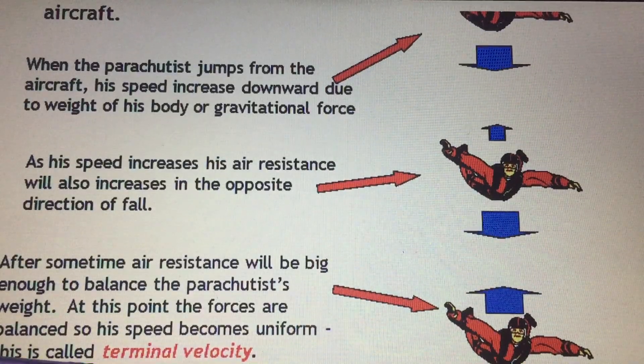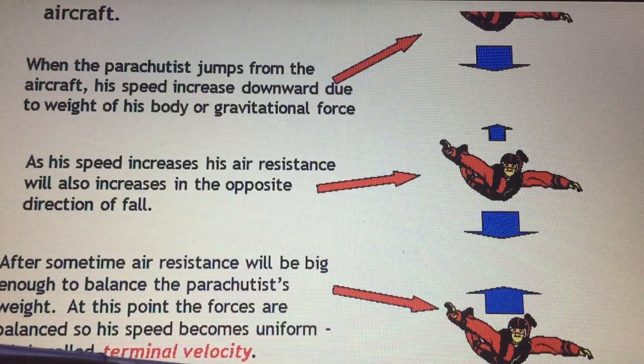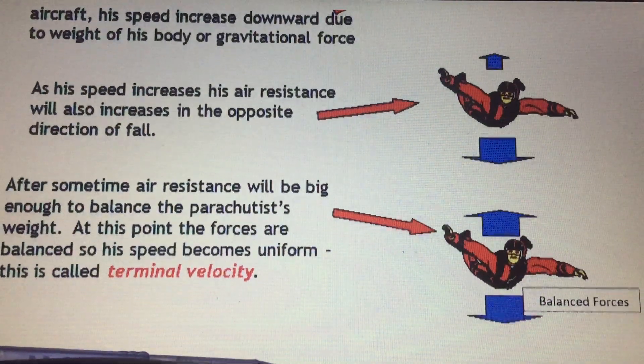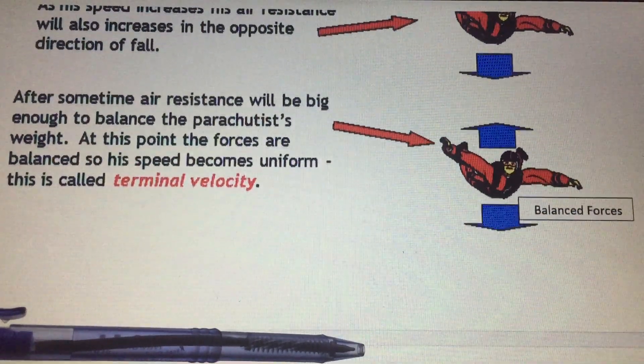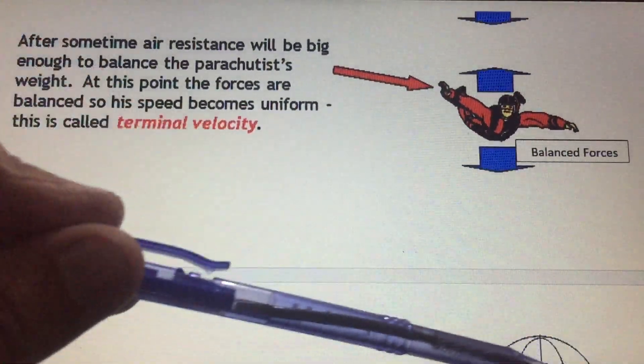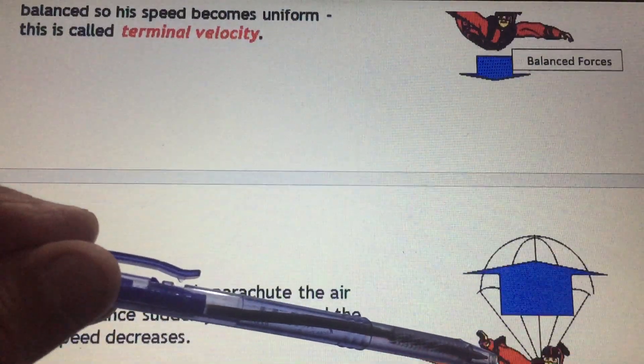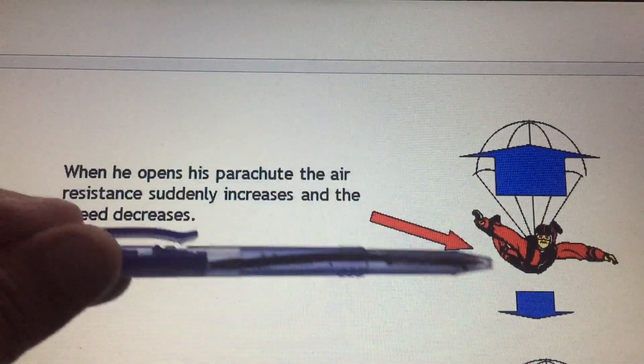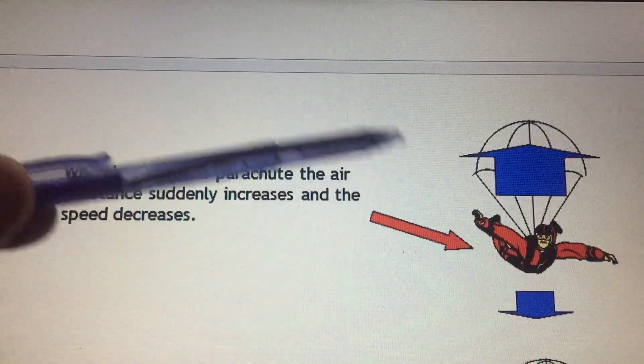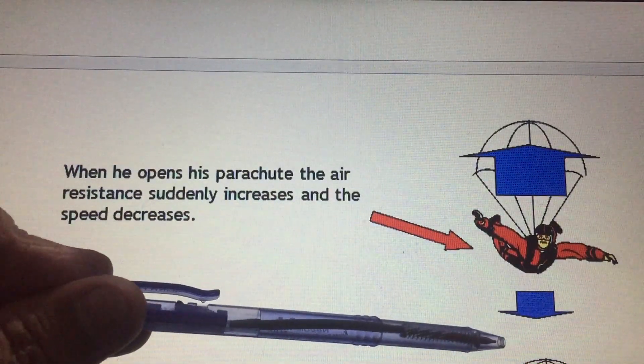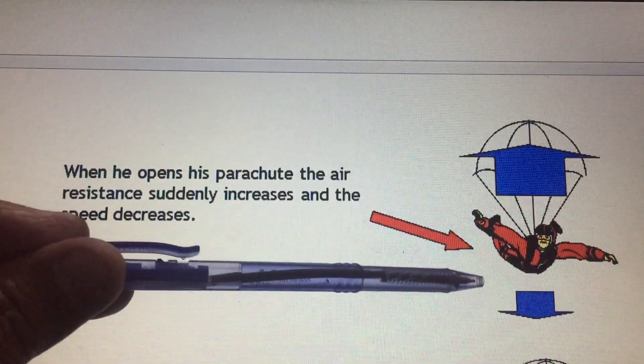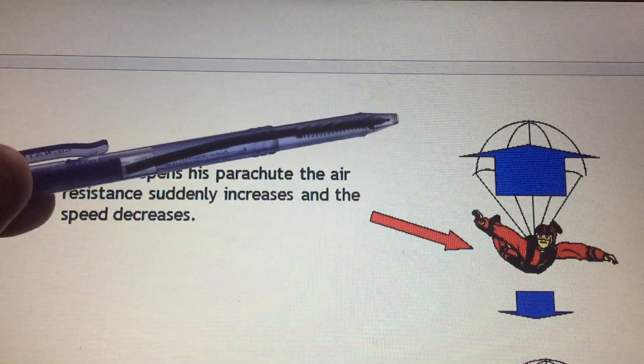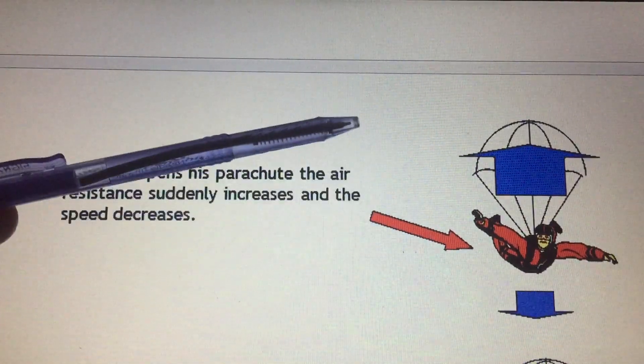After reaching terminal velocity, the parachutist falls continuously and then opens the parachute. When the parachute opens, air resistance becomes much higher, exceeding the weight, so the parachutist will move upward.